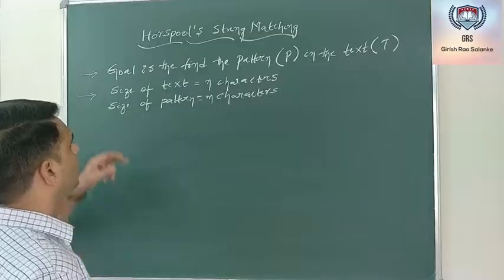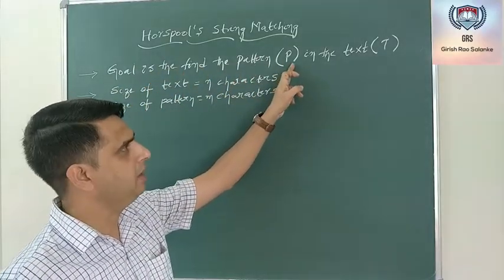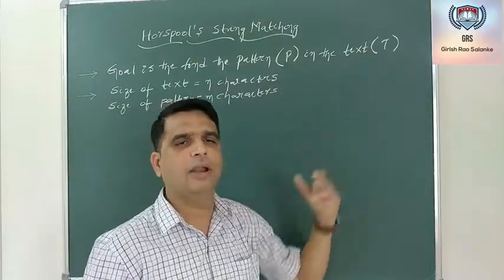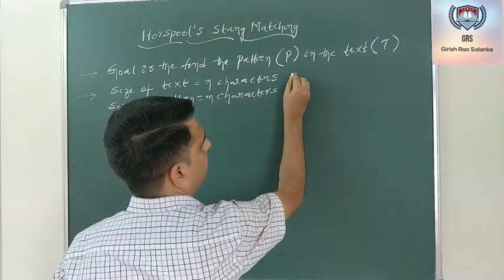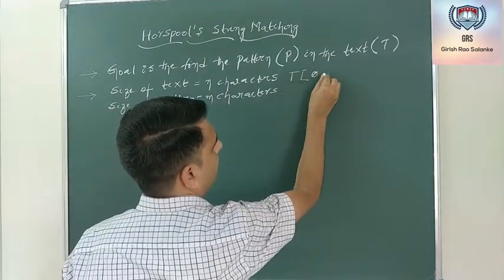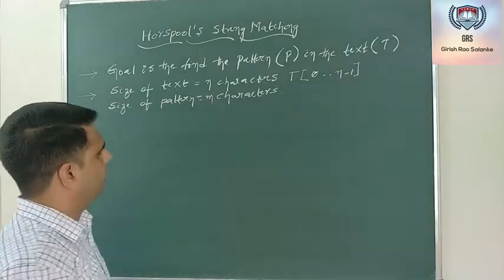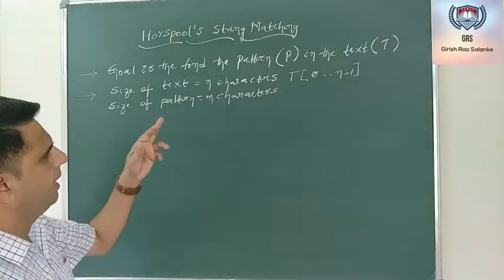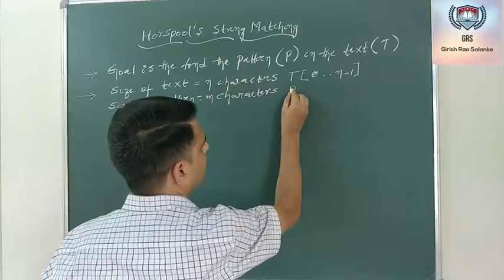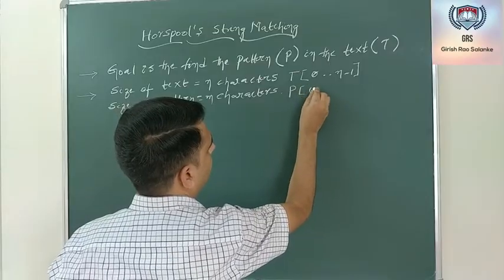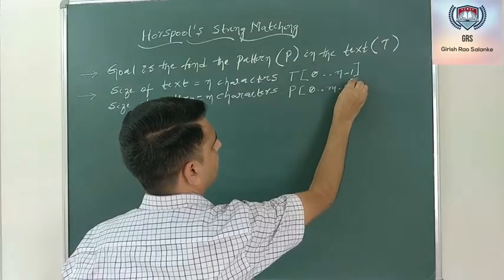The goal is to find pattern P in the text. Let's assume that the size of text is n characters — the text can be denoted with an array of characters from 0 to n minus 1. The pattern size is m characters, and the pattern P can be denoted with an array indexed from 0 to m minus 1.